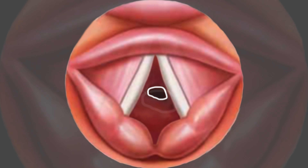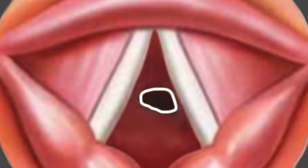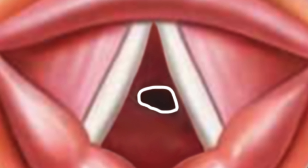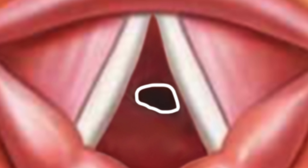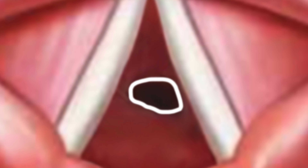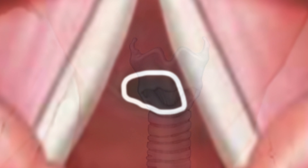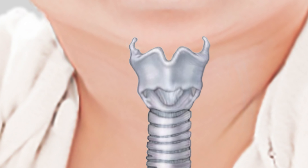Due to postoperative morbidity and mortality, the anterior cricoid split has replaced the tracheostomy as the main procedure to resolve subglottic stenosis. The anterior cricoid split procedure is used to correct mild to moderate subglottic stenosis.